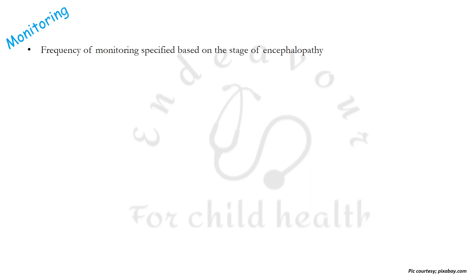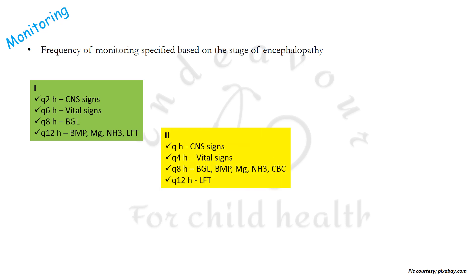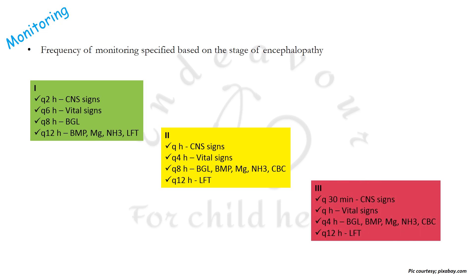Frequency of clinical and laboratory monitoring has been specified based on the stage of encephalopathy. In stage 1: CNS signs every 2 hours, vital signs every 6 hours, blood glucose every 8 hours, and basic metabolic panel, electrolytes, calcium, magnesium, ammonia, and LFTs every 12 hours. In stage 2: CNS signs every hour, vital signs every 4 hours, blood glucose, BMP, magnesium, ammonia, and CBC every 8 hours, LFTs every 12 hours. In stage 3: CNS signs every 30 minutes, vital signs hourly, blood glucose, BMP, magnesium, ammonia, and CBC every 4 hours, LFTs every 12 hours.